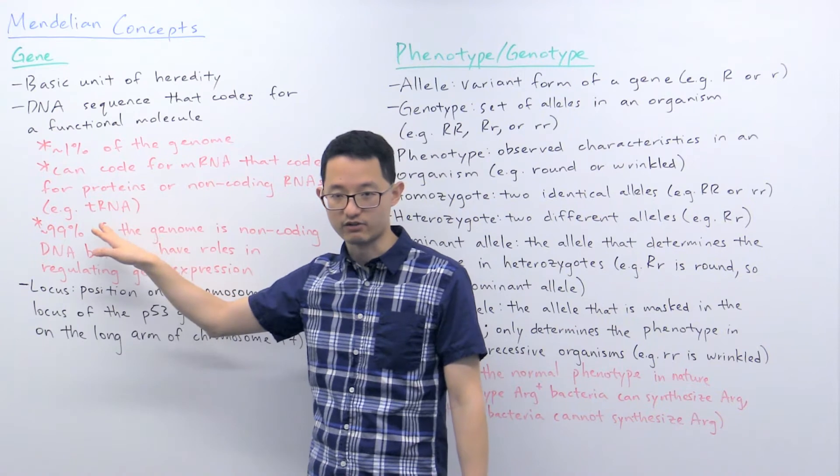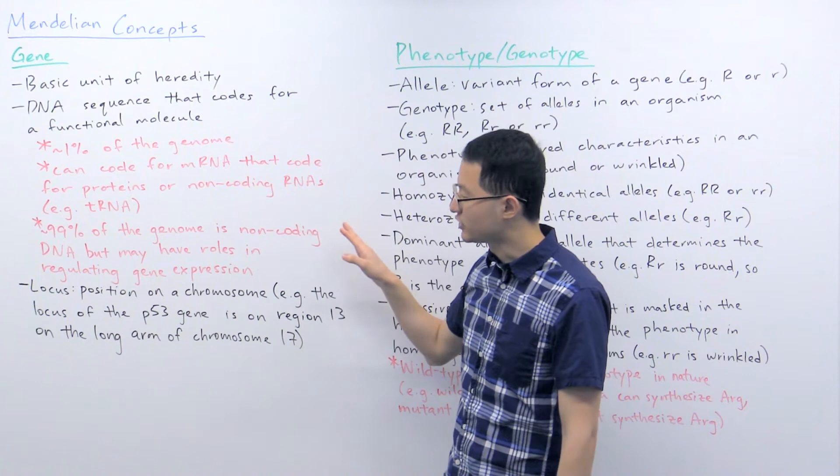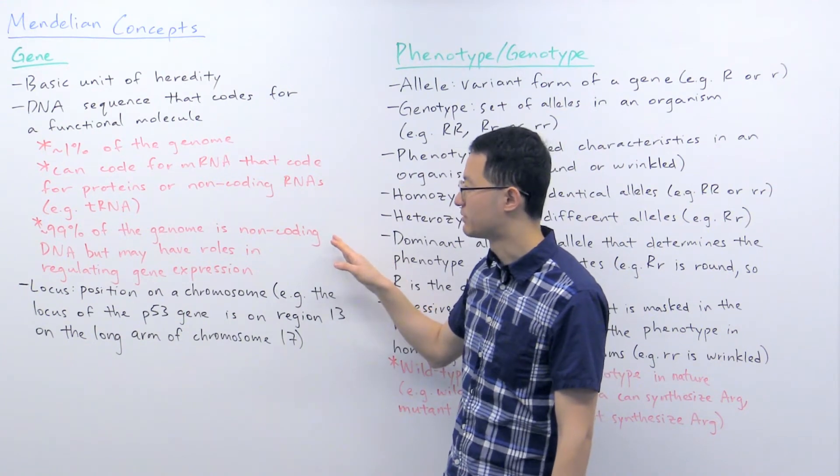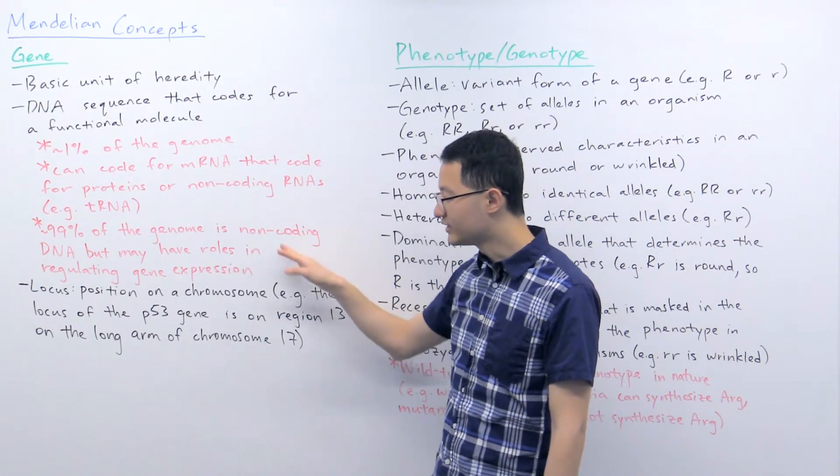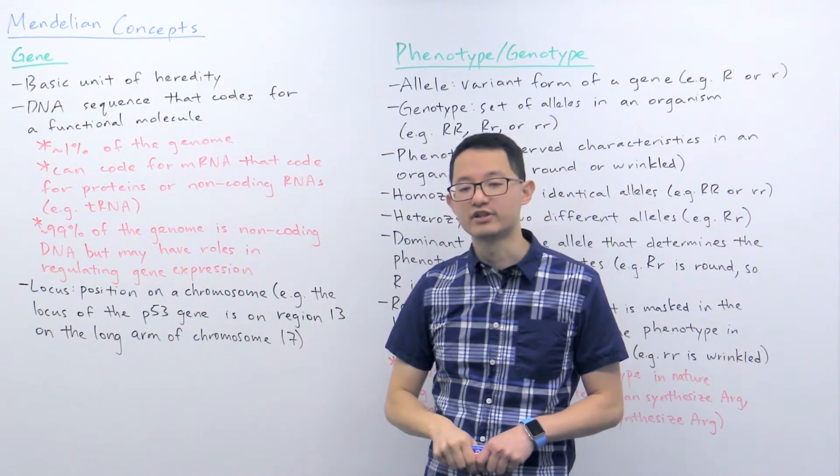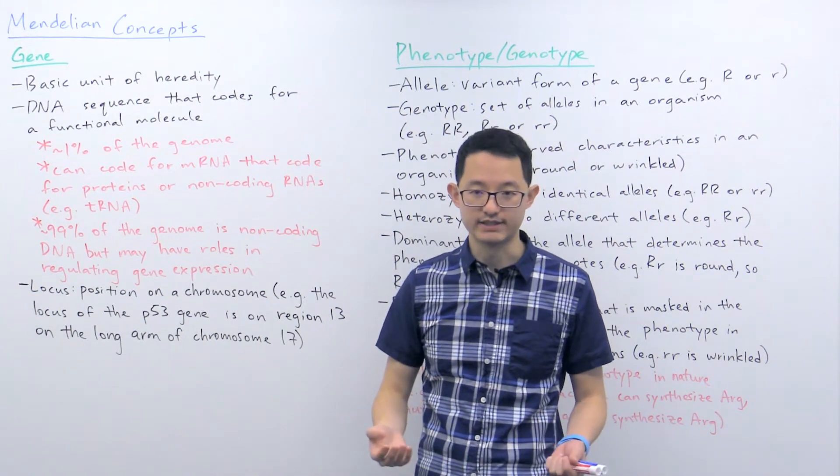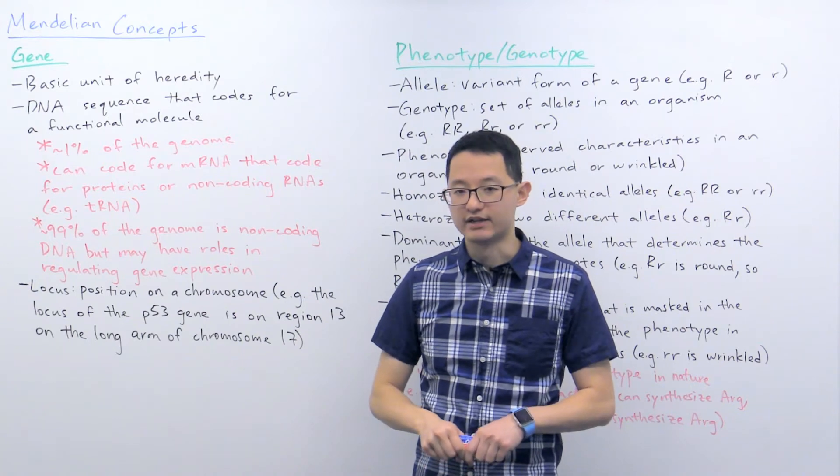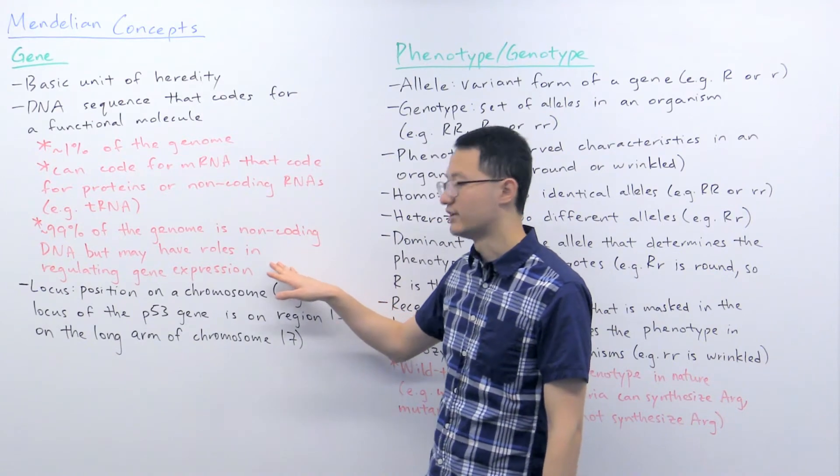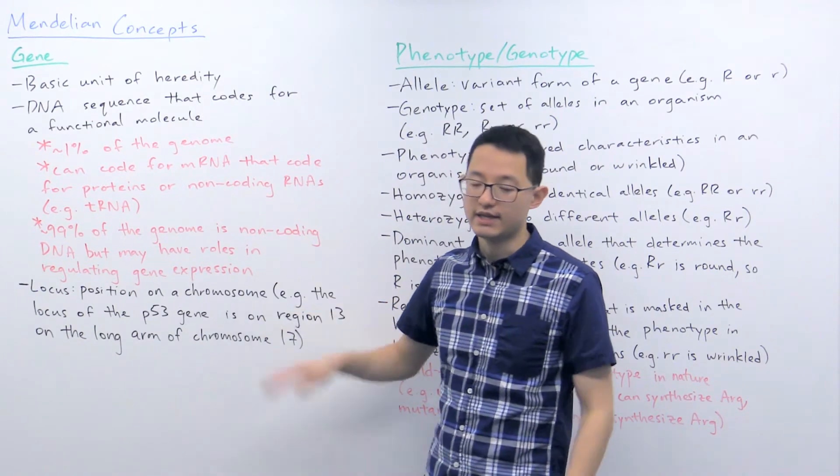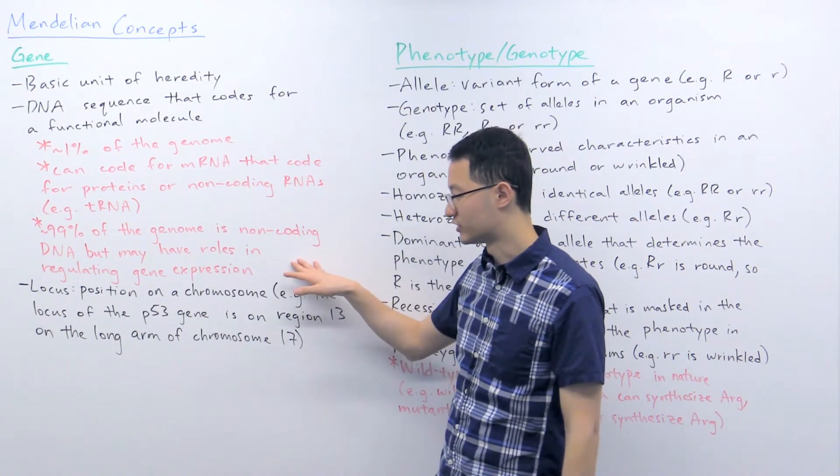For example, tRNAs are an example of non-coding RNAs. Now if coding sequences represent only 1% of the genome, that means 99% of the genome is non-coding DNA. In the past, this non-coding DNA was thought to have no function in cellular processes. However, that has been recognized to be incorrect. And a lot of these non-coding regions of DNA have roles in regulating gene expression. And right now, active studies are looking more into these non-coding regions of DNA.